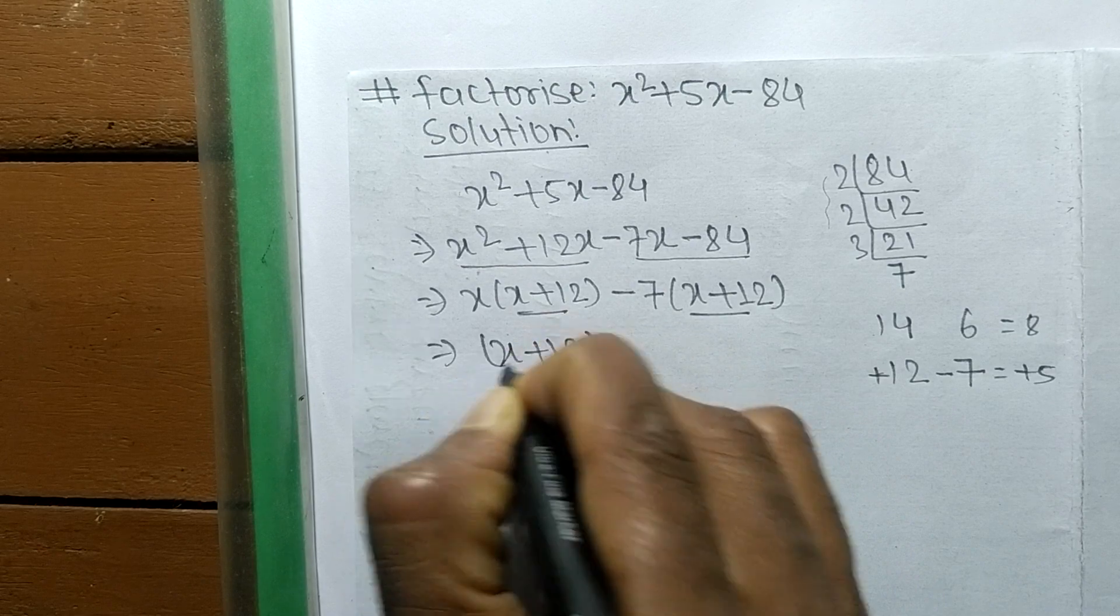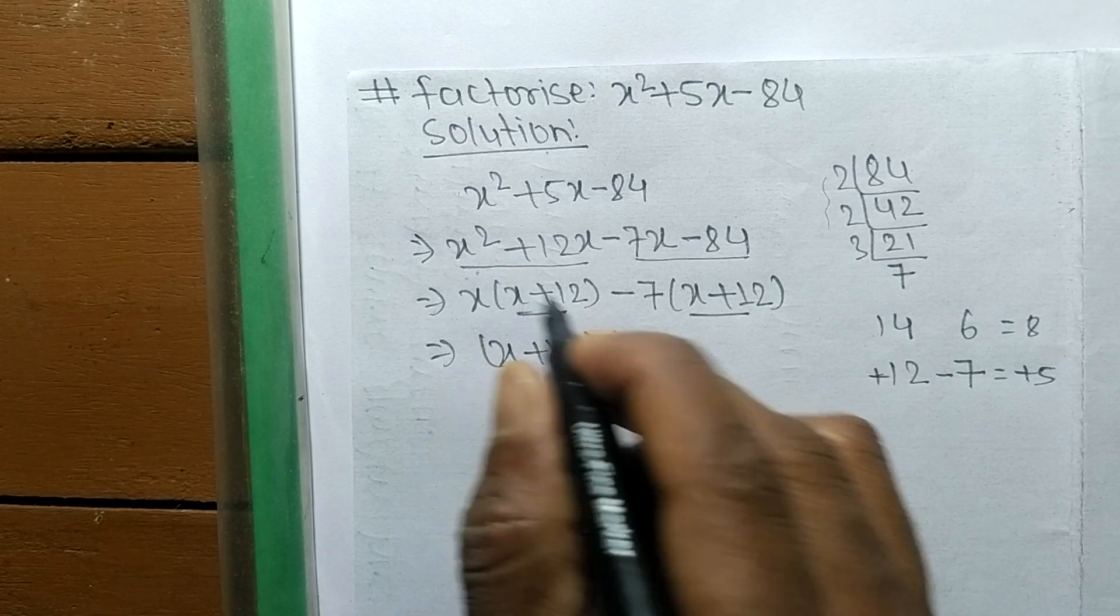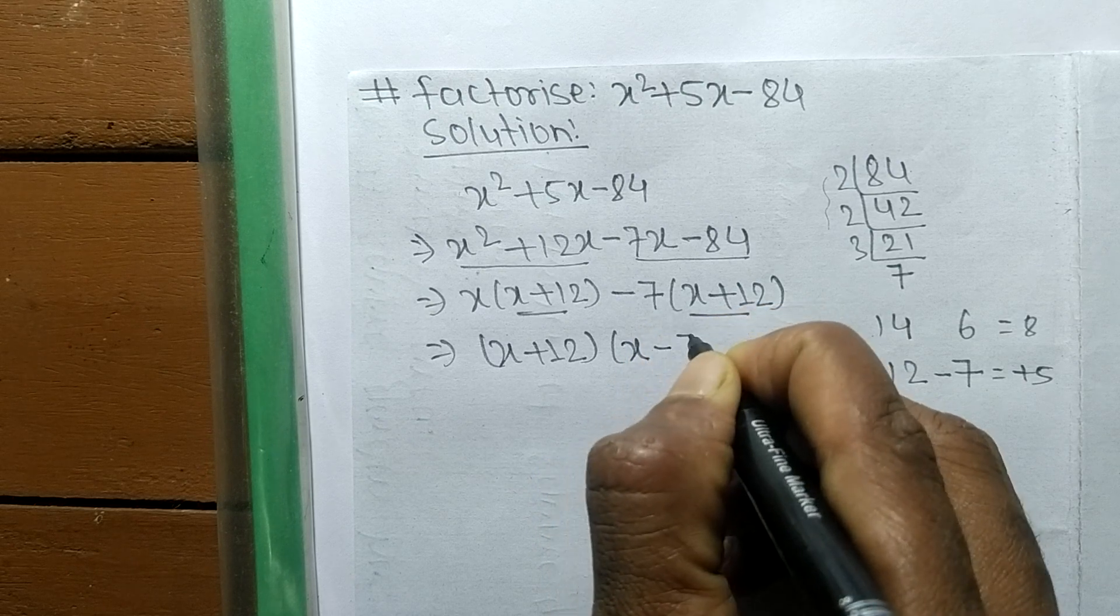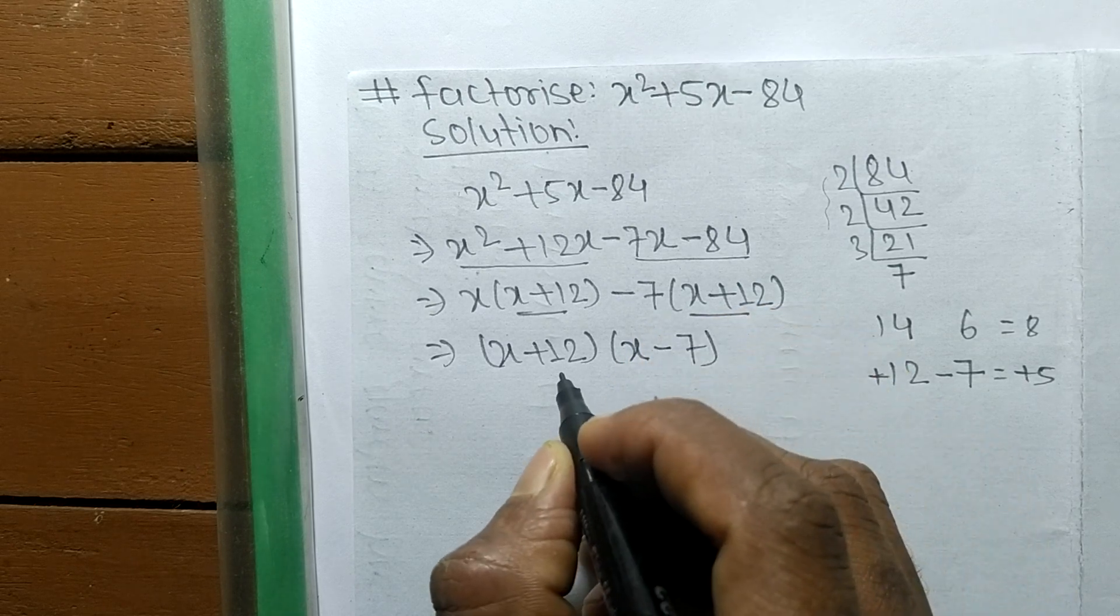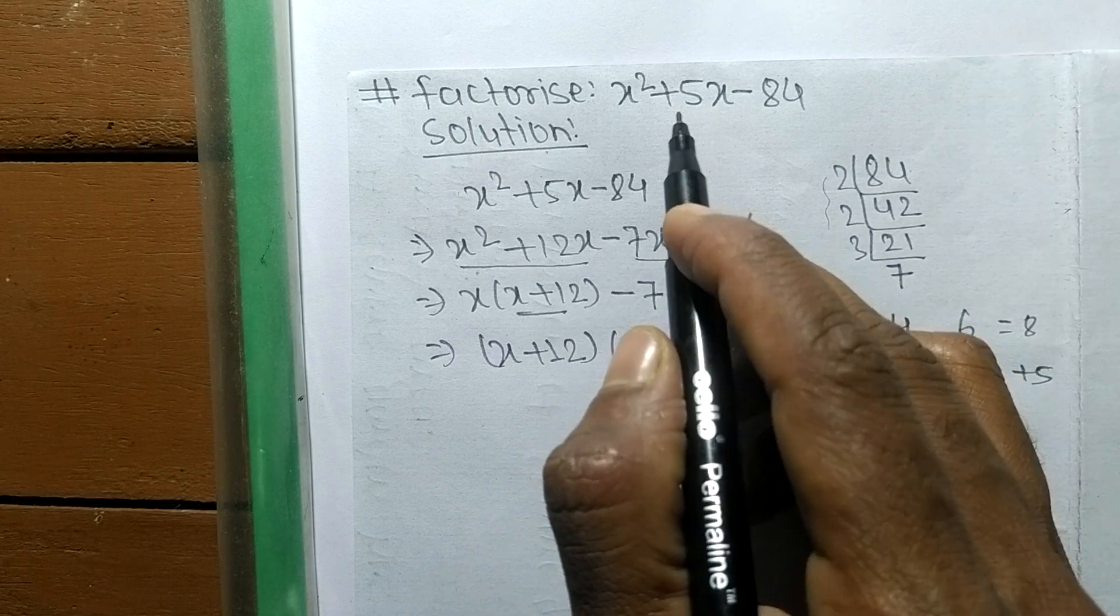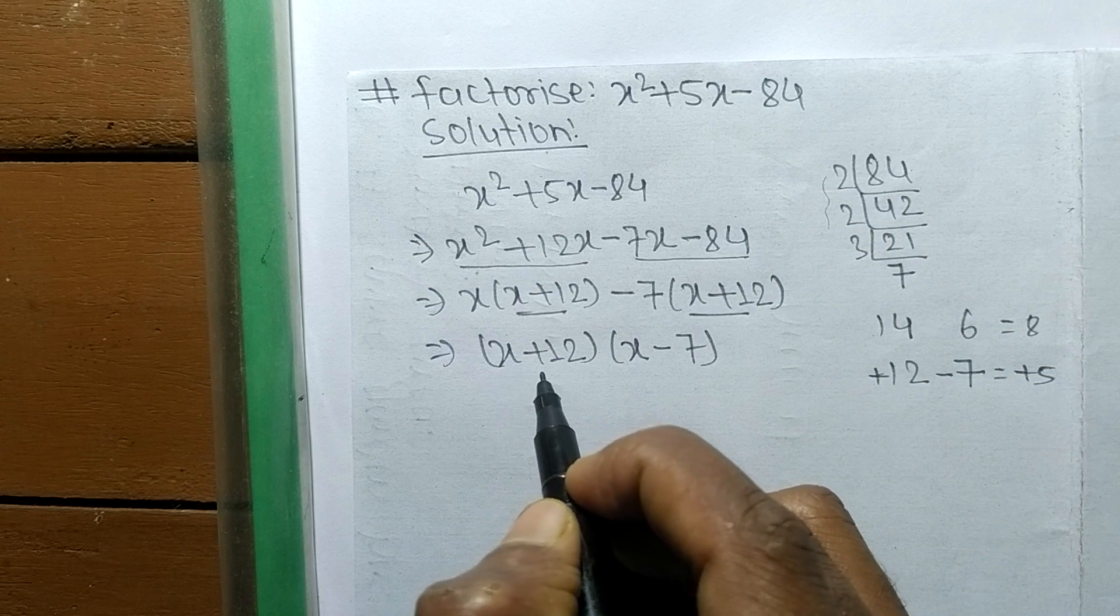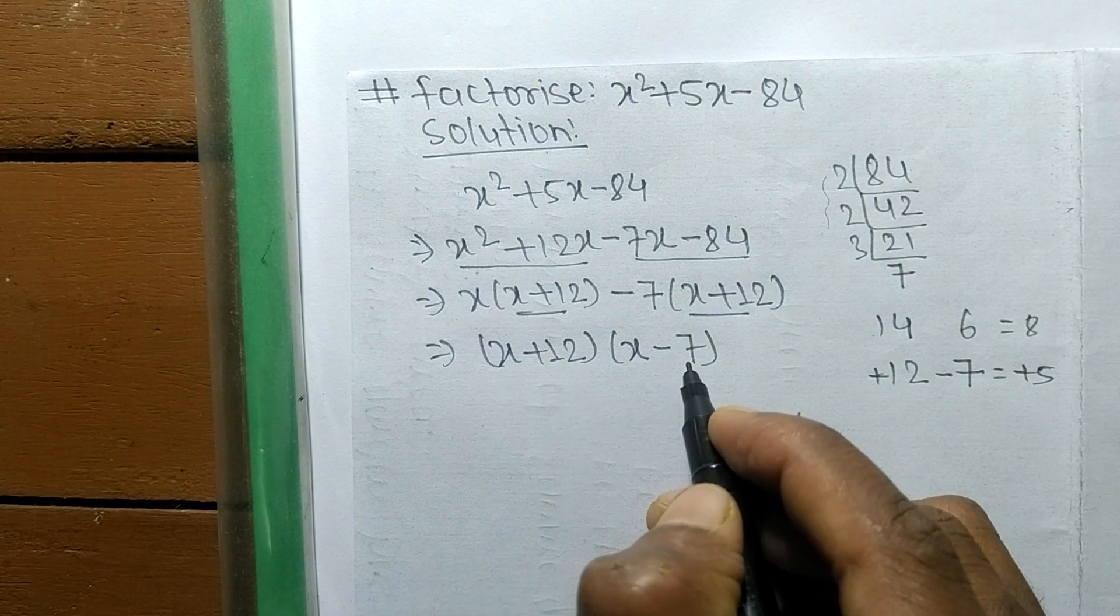(x + 12) is common. The remaining in the first pair is x, and in the second pair is -7. So the factors of x² + 5x - 84 are (x + 12) and (x - 7).